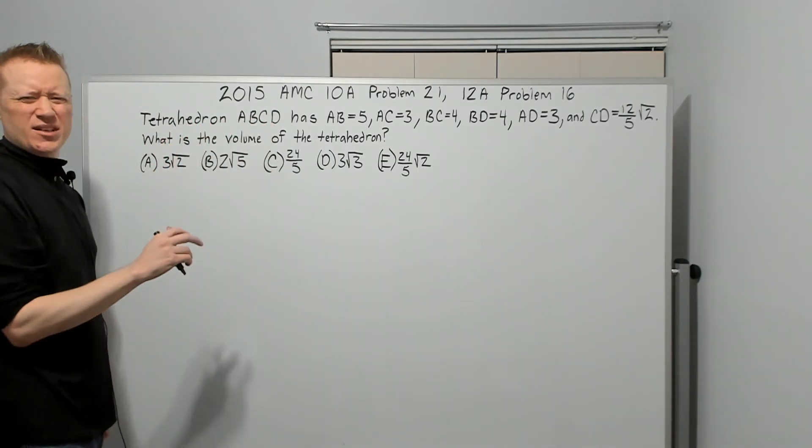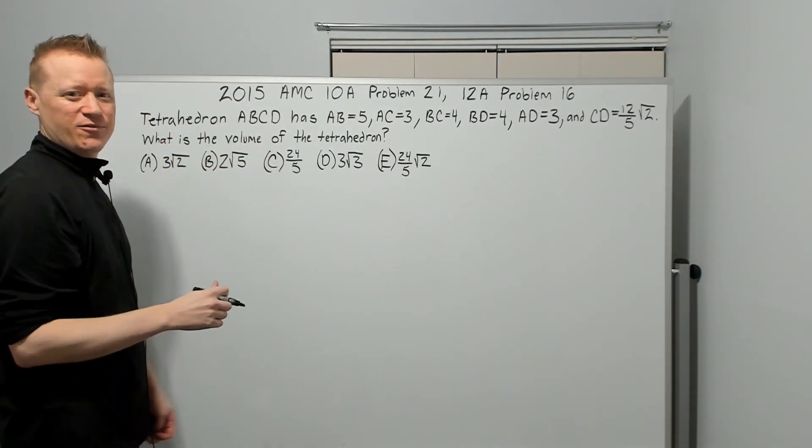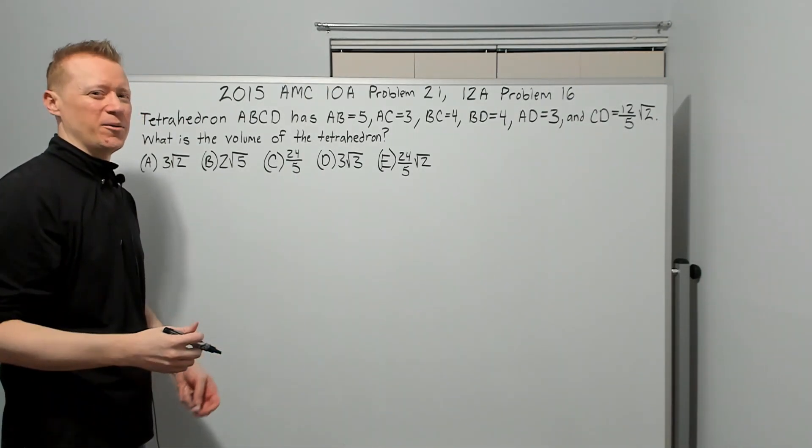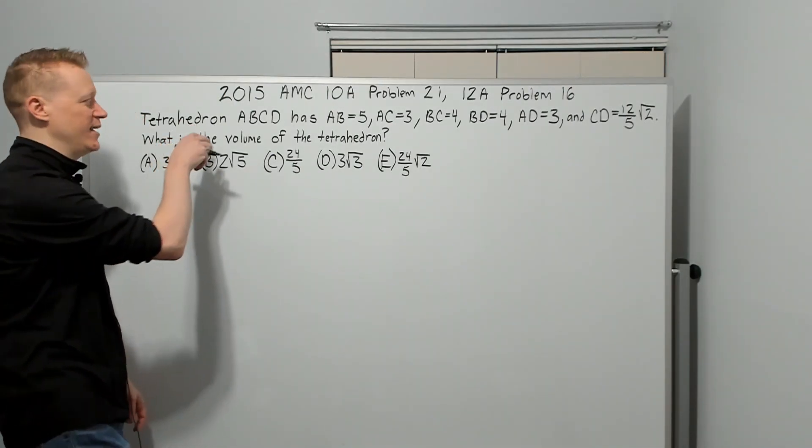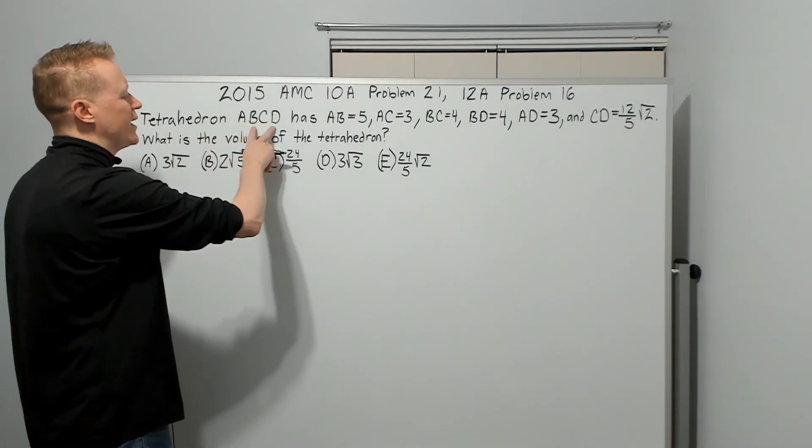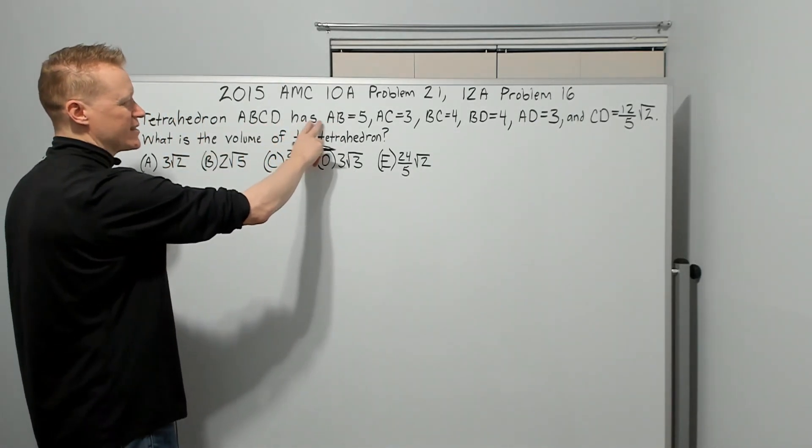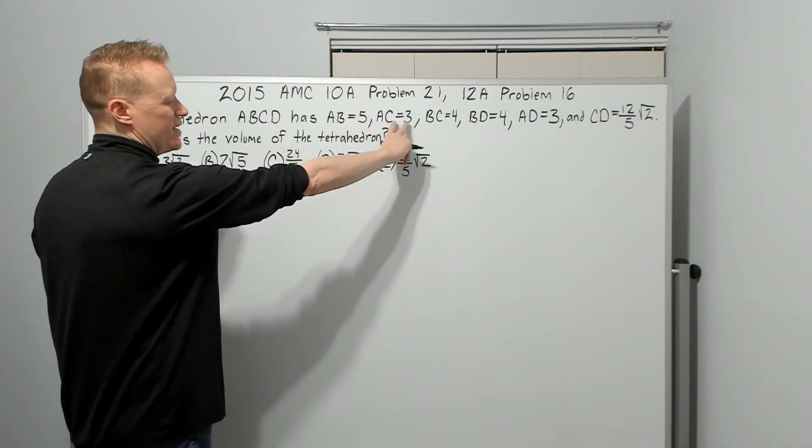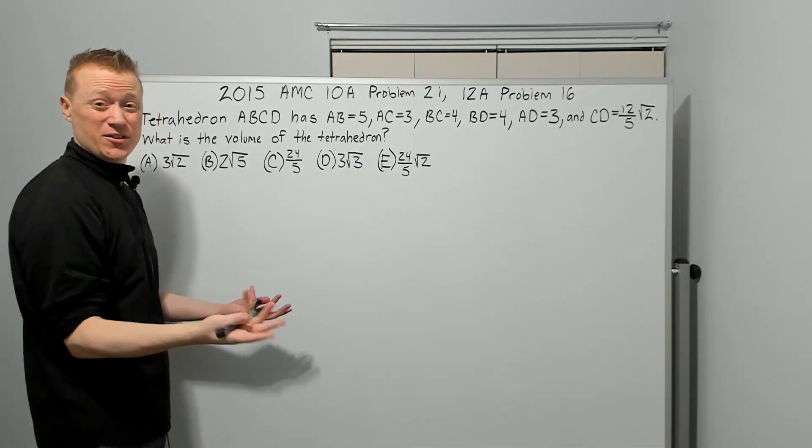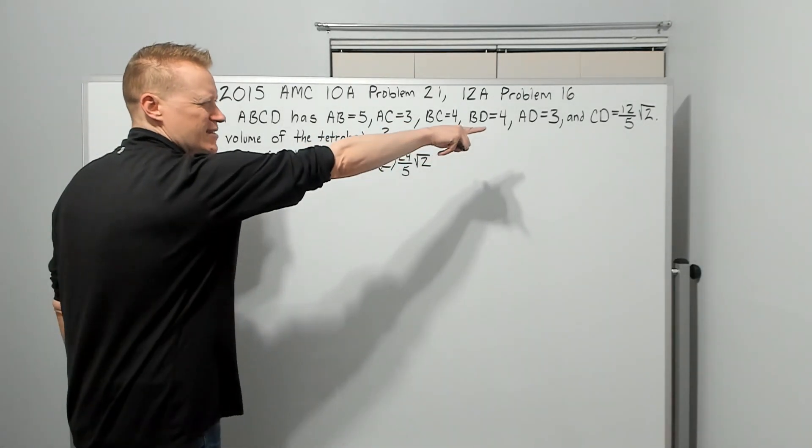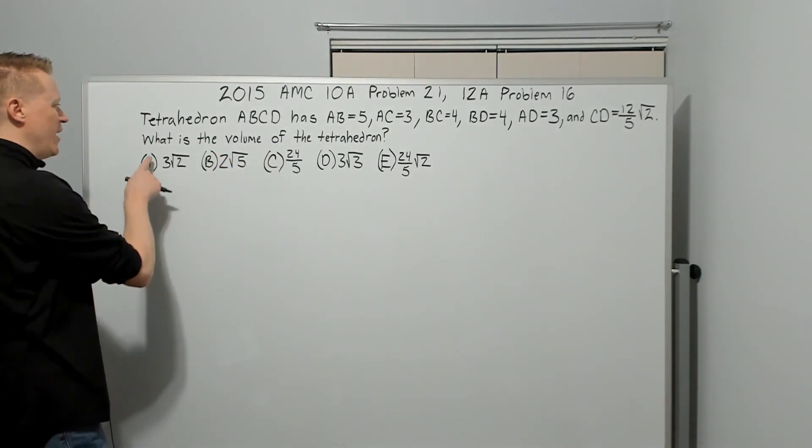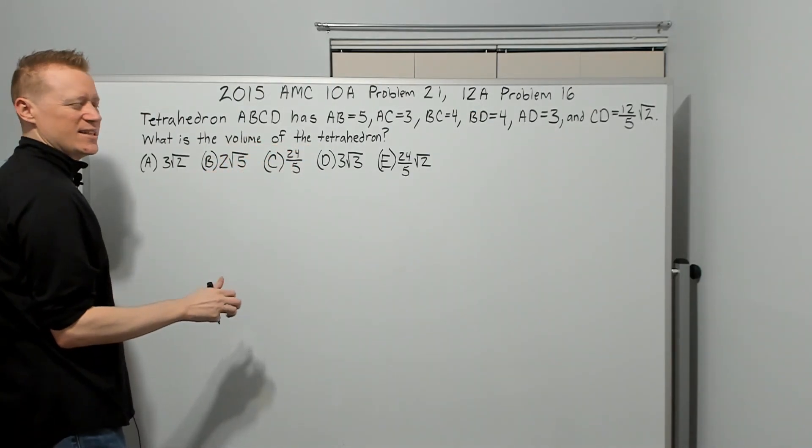Tetrahedron ABCD. What's a tetrahedron? That's a fancy name for triangular pyramid. But if you were a triangular pyramid, which would you rather be called? This sounds cooler, right? So tetrahedron ABCD, basically polyhedron tetra 4. It has AB equal to 5, AC 3, and all these lengths - 3, 4, 5, probably giving us 3, 4, 5 so that we recognize it as the right triangle. And then CD, 12 fifths root 2 down there. What's going on? We don't know yet. What is the volume of the tetrahedron?